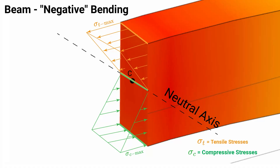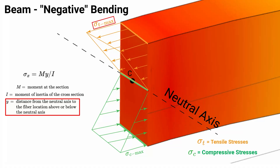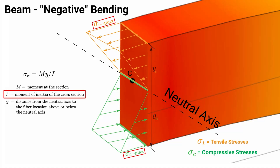These stresses are calculated using the same formula, where M is the moment at any section — in this case the maximum negative bending moment occurring at the middle. The y value is the distance from the neutral axis to any fiber location: for maximum tensile stress, y goes from the neutral axis up to the top tensile fiber; for maximum compressive stress, y goes from the neutral axis down to the very bottom compressive fiber. Both are divided by I, the moment of inertia of the cross section about the axis that bending occurs about, found in the handbook.